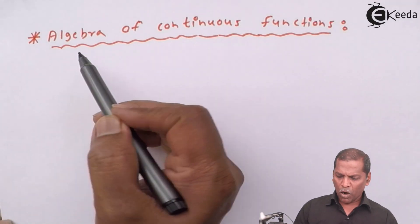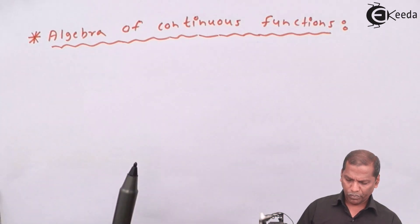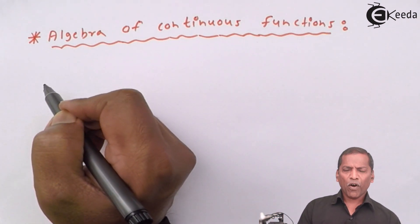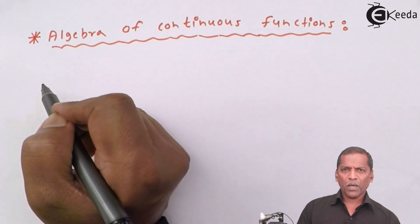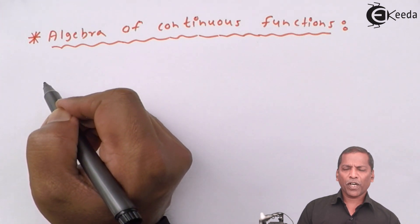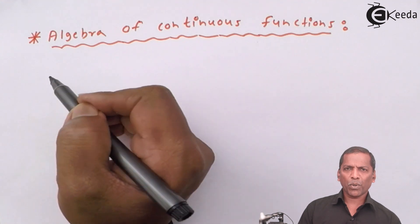Algebra of Continuous Functions. Let f and g be two real valued functions, continuous at x equal to c.